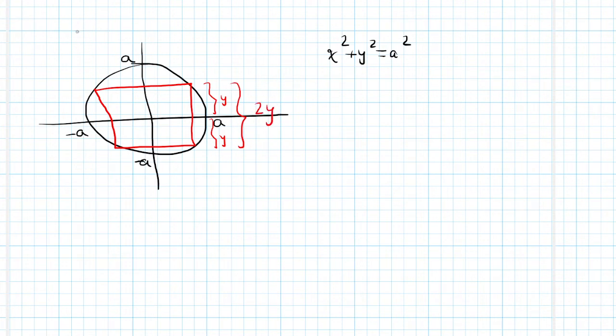Now what is y? Well we have to go back here and solve for y. We'll subtract x squared from both sides and then take the square root. So y is the plus or minus the square root of A squared minus x squared. Now because we're talking about distance we're going to look at the positive y. So 2y would just be twice the square root of A squared minus x squared.